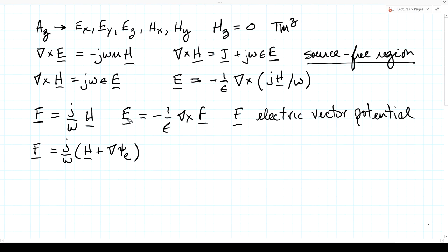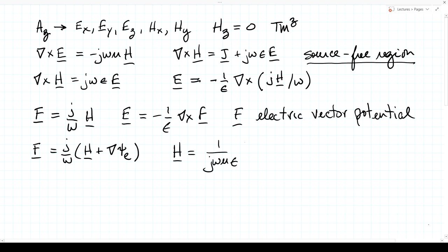To get H, we go to Faraday's law. H = (1/jωμ) curl of E, which gives the curl of the curl of F. So H = (1/jωμε)∇×∇×F. So we have E = -(1/ε)∇×F and H = (1/jωμε)∇×∇×F as the expressions for the fields in terms of the electric vector potential F.